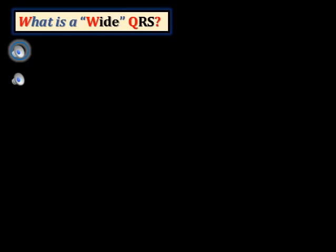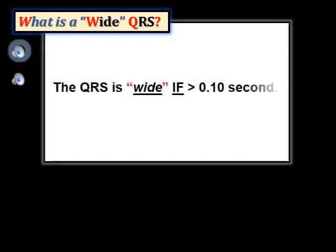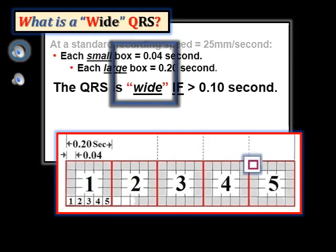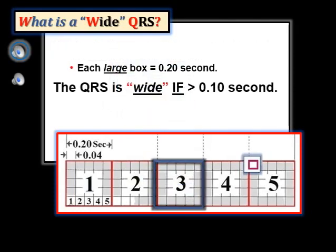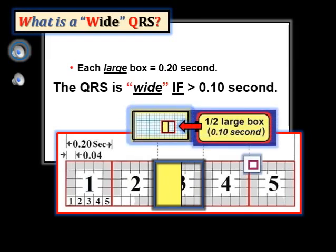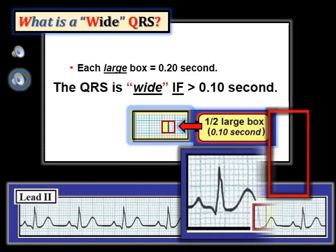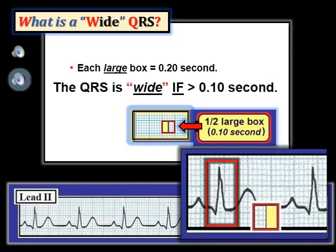How, then, do we define wide? Life is simpler if you accept anything over 0.10 second in an adult as being wide. Assuming the standard recording speed of 25 millimeters per second, a large box on ECG grid paper takes 0.20 second to record. Therefore, half of a large box takes 0.10 second, which for practical purposes means that the QRS is wide if it is longer than half a large box. This is an example of normal sinus rhythm — note that the QRS is wide as it takes up more than half a large box, so a conduction defect or bundle branch block is present.